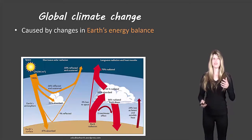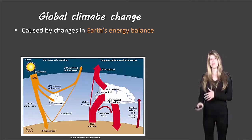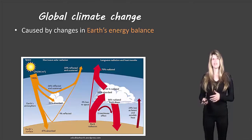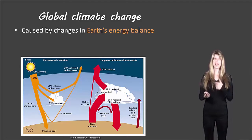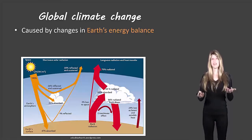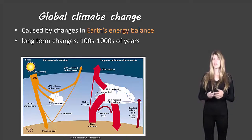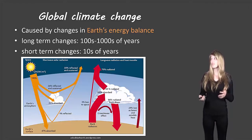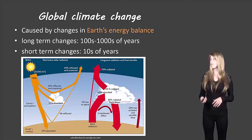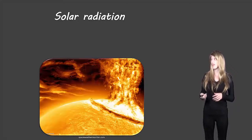We talked about the amount of energy coming in and the amount of energy leaving the Earth — they must be equal. If more energy comes in, the Earth will heat up. If more energy goes out, the Earth will cool down. These changes can be long-term over hundreds of thousands of years or short-term over decades. We're going to focus on those long-term changes today.